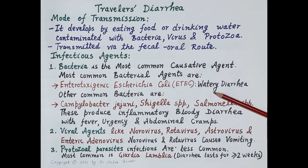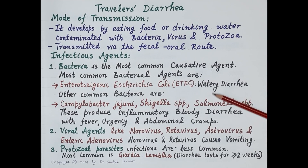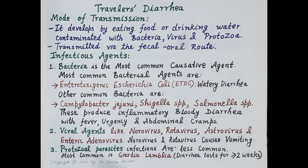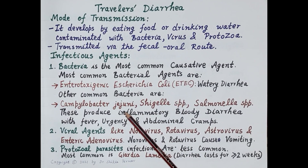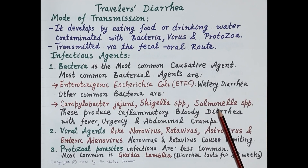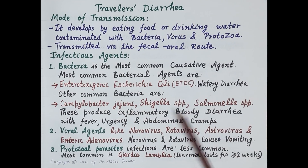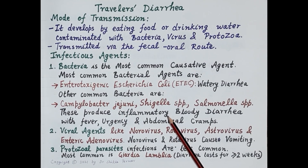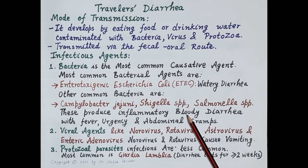Infectious agents include bacteria. The most common bacterial agent is enterotoxigenic E. coli (ETEC), responsible for about 30–60% of cases of travelers' diarrhea, where watery diarrhea is seen. Other common bacteria that cause travelers' diarrhea are Campylobacter jejuni, Shigella species, and Salmonella species; these bacteria produce inflammatory diarrhea, causing inflammation of the colon.